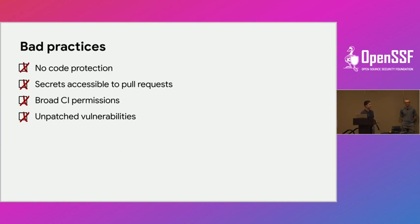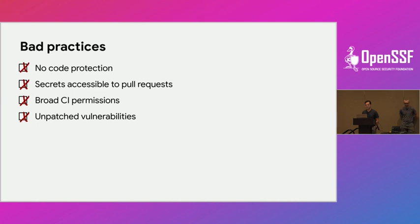Not just good practices — Scorecard also looks at bad practices. Things like: do you have a bus factor of one, maintained by only one developer? If so, there's a higher risk — if something happens to that developer, who's going to maintain the project? It also looks for whether your secrets are accessible to pull requests, and how an attacker can circumvent permissions and bypass code reviews.